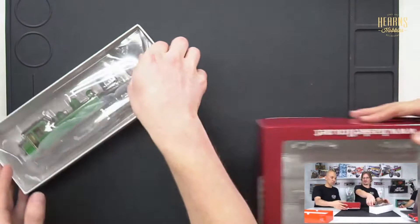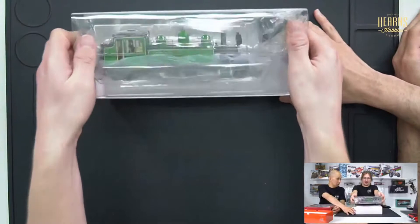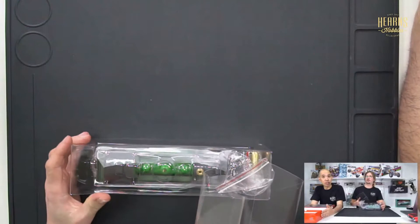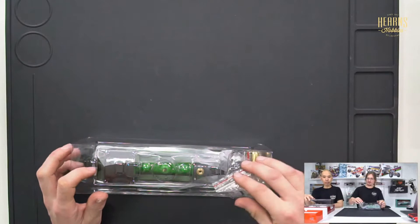For anyone who doesn't know, Puffing Billy is a narrow gauge train which is actually operating. It runs from Belgrave to Gembrook, that's the length of it.